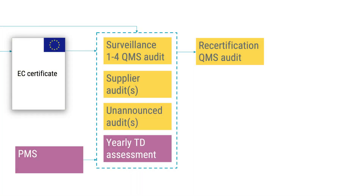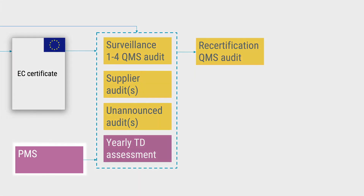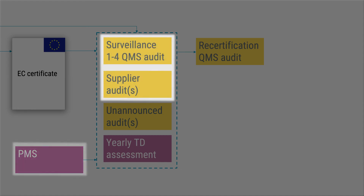When during the certification cycle the full range of the manufacturer's devices has been assessed by TD assessment and there is still time left on the certification cycle, the notified body shall focus on technical documentation relating to post-market surveillance during the remaining audits of that cycle. So when no more TD sampling is to be done, the focus will be PMS-related documentation during the coming audits.